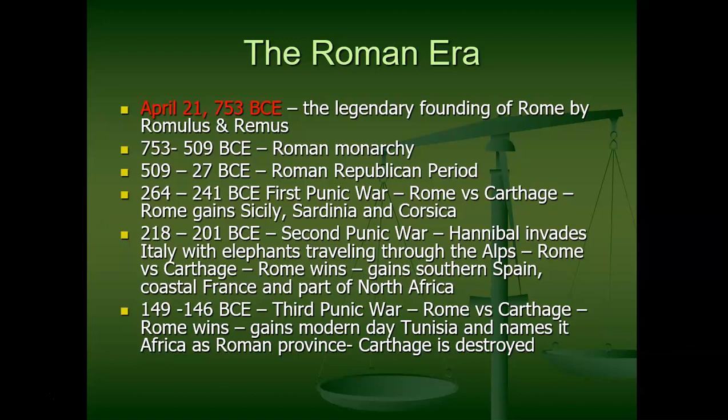Rome is actually divided into four periods. Two of them are on this slide: the monarchy period when they had kings, and the republican period when they were a democracy. The empire, when they had emperors, is actually divided into two parts — early empire and late empire — because during the late empire, Rome is basically starting to fall apart.